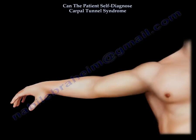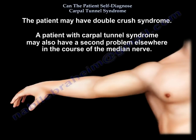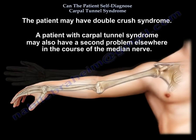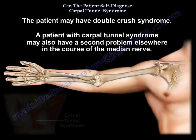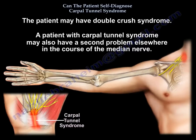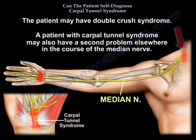A patient may have double crush syndrome. For example, a patient with Carpal Tunnel Syndrome may also have a second problem elsewhere in the course of the median nerve.